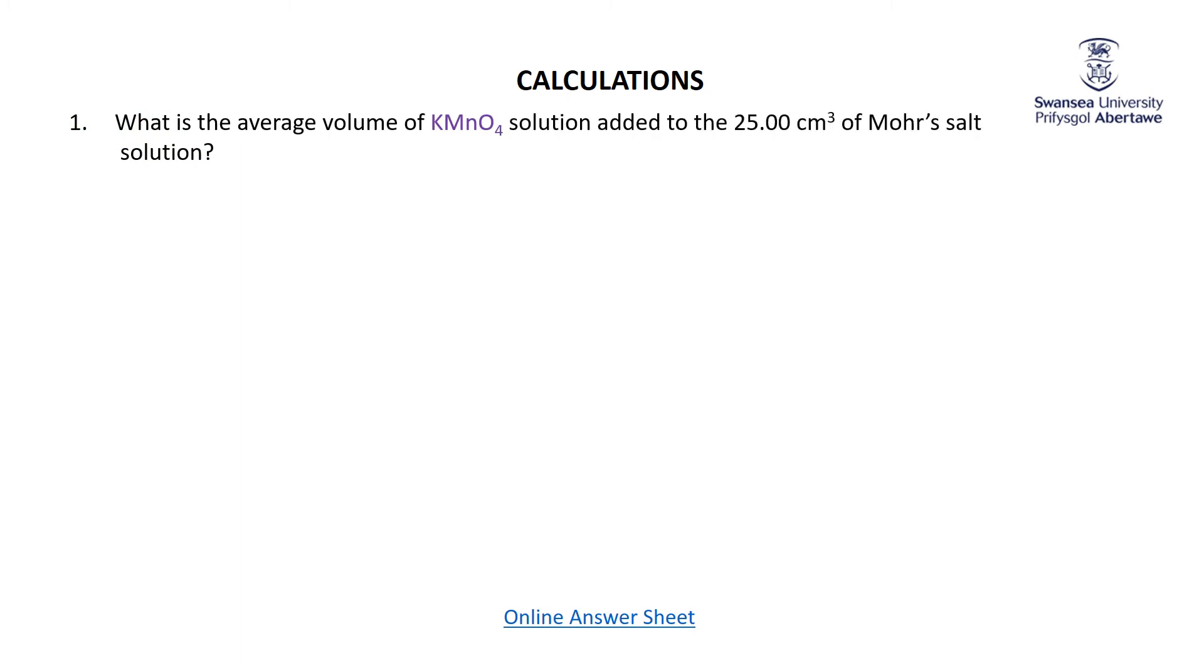First question: what is the average volume of KMnO4 solution added to the 25.0 cubic centimeters of Mohr's salt solution? Each titration I started with, as precisely as possible, 25 cubic centimeters of the Mohr's salt. I added the potassium permanganate. You can either use all three of my titrations because my rough one was actually a pretty good rough one, or you can just use the two accurate ones.